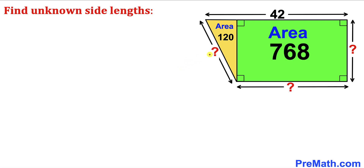Welcome to pre-math. In this video we have a trapezoid that consists of a rectangle and a right triangle. The area of the rectangle has been given as 768 square units, the area of the right triangle is 120 square units, and one of the side lengths of the trapezoid has been given as 42 units. We are going to calculate the remaining side lengths.